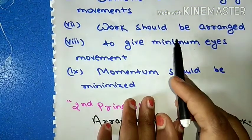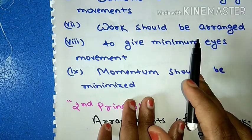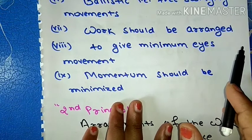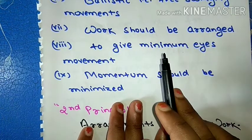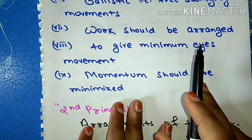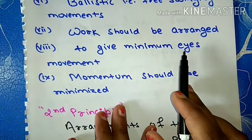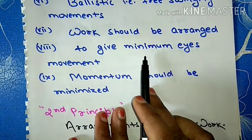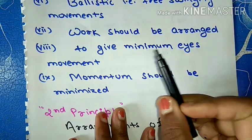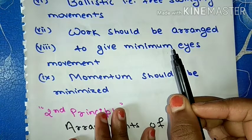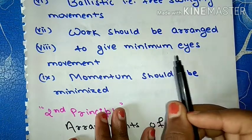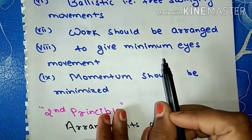Seventh point: work should be arranged to give the operator repetitive nature of motion. That is, rhythm in motion. The work arrangement should be such that the operator can continue the work continuously. Next point is to give minimum eye movements, so that therbligs search and find take minimum time. Work should be arranged so that eye movement is minimized, which reduces the time taken for searching and finding.